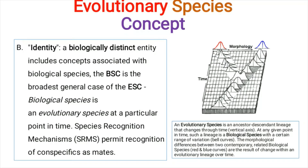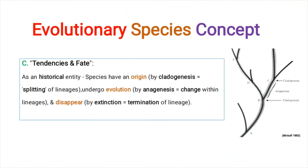Species recognition mechanisms are the mechanisms used by a species to recognize conspecifics — meaning members of the same species — as mates. Next, regarding tendencies and fate: we are considering the species as a historical entity. A species is definitely a historical entity that has evolved and originated from ancestors.